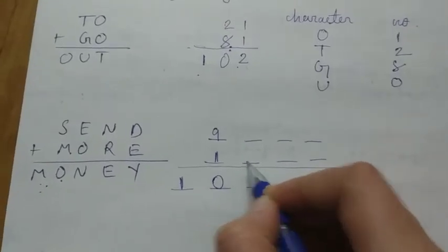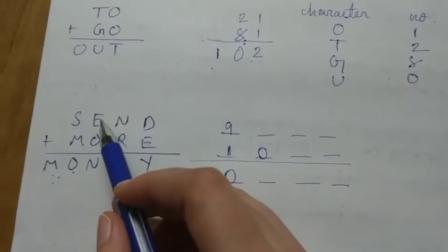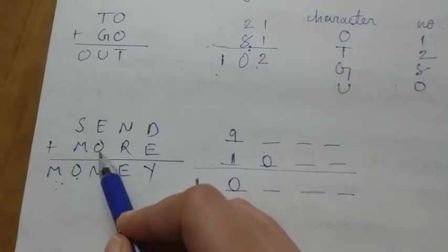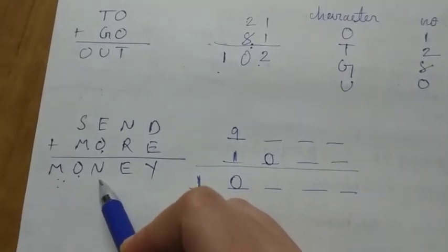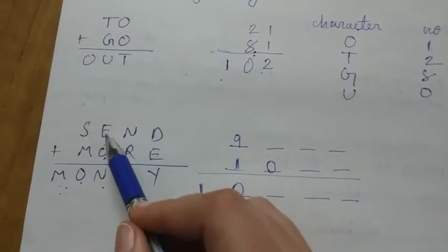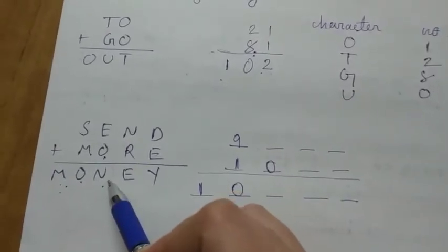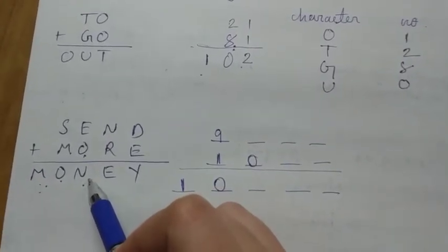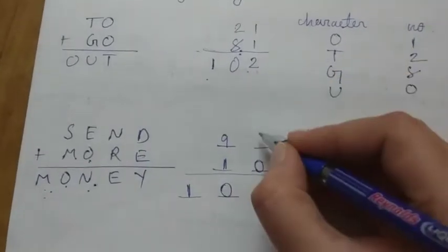Here also O is present, so it will be 0. Now notice the fact: any number plus 0 generally equals that same number, but this is not the case here. When we are adding E to 0, we are getting N. This is possible when we get a carry. So for example, I am assigning E equals 5.